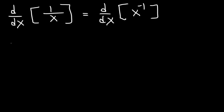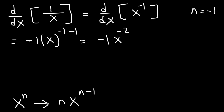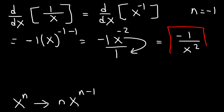Now we can use the power rule. Recall that the derivative of x to the n is n times x raised to the n minus 1. Here n is negative 1, so it's negative 1 times x raised to negative 1 minus 1, which is negative 2. Moving x back to the bottom, the final answer is negative 1 over x squared.